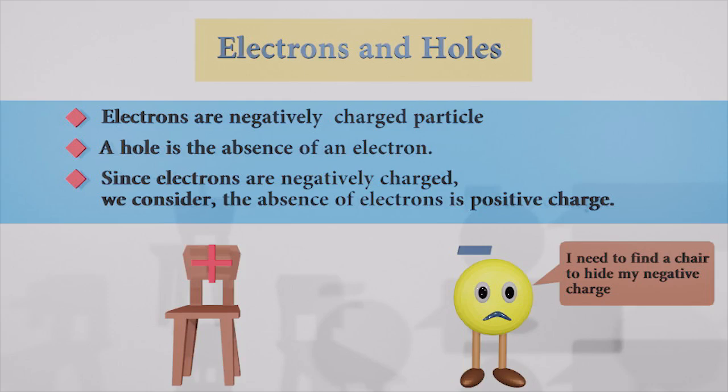Now pay attention to the chair. Earlier there was an electron. Now it's a free chair that has a positive charge. The chair is looking for an electron because it also doesn't like to be alone. This chair actually represents a hole, the absence of an electron.